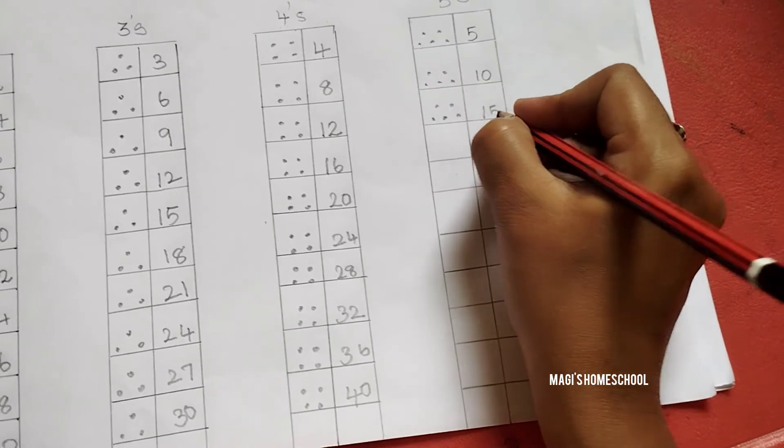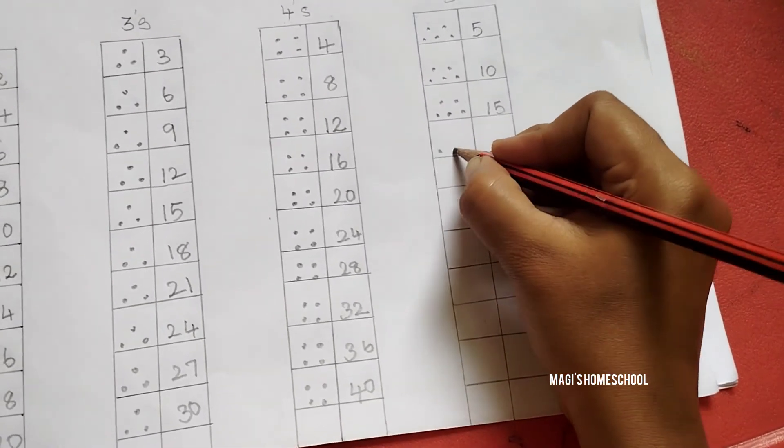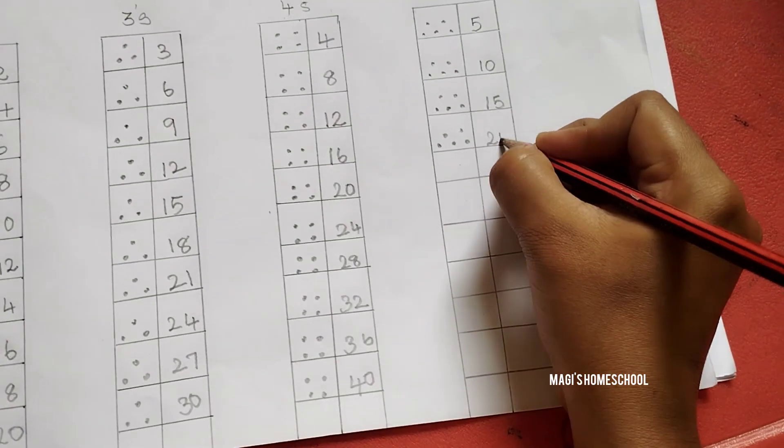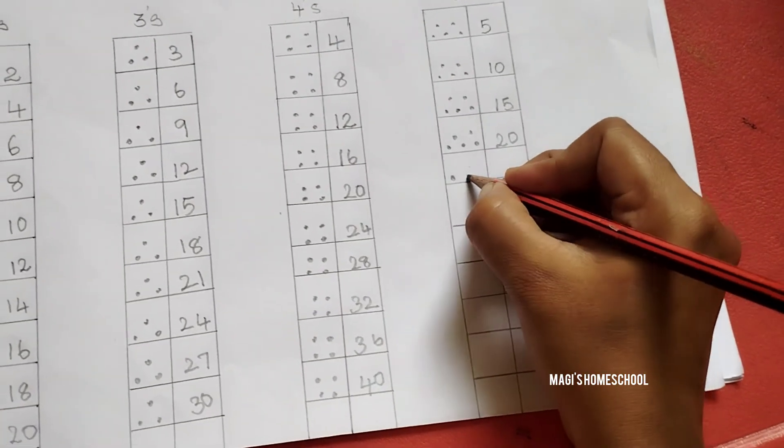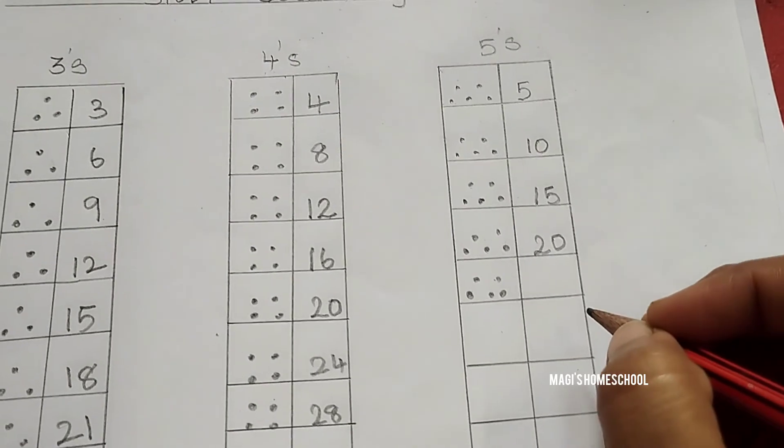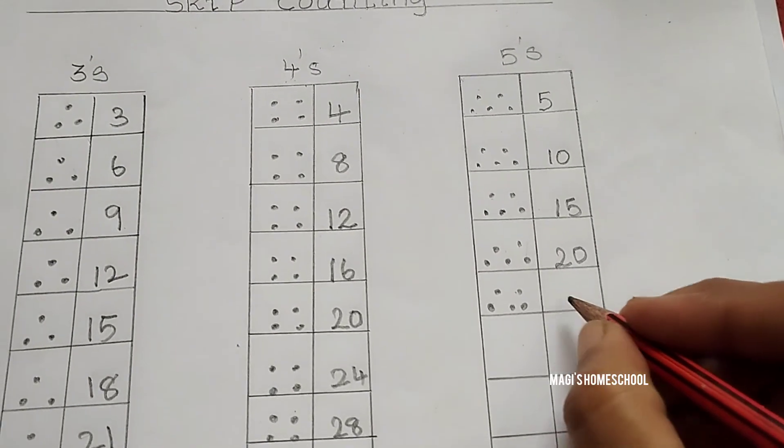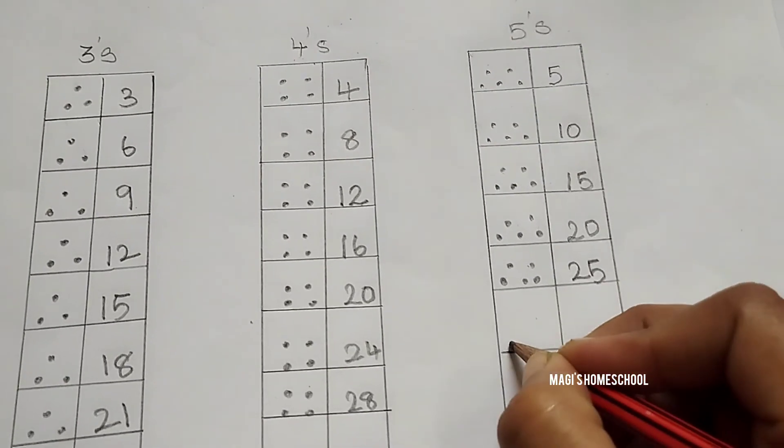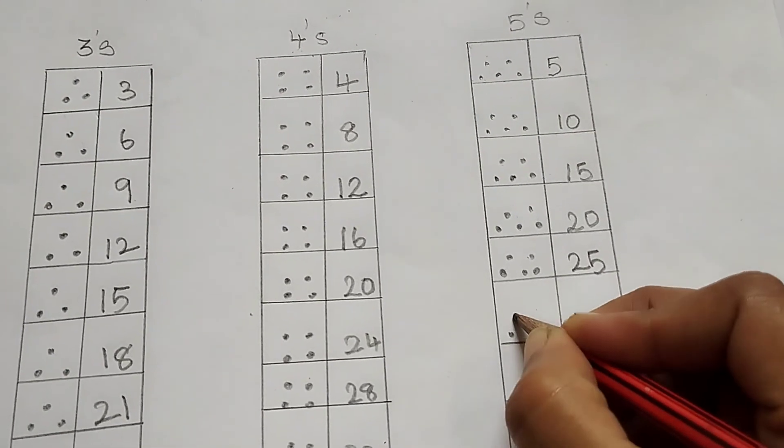Write 15. After 15, 16, 17, 18, 19, 20. Write 20. After 20, 21, 22, 23, 24, and 25. Write 25. After 25, 26, 27, 28, 29, 30.